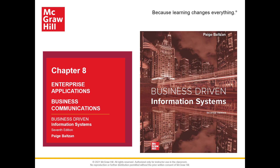Organizations use various types of information systems to run their daily operations. These information systems range from low-level transactional systems, such as purchasing and order delivery, to high-level decision-making systems, such as decision support systems. All these systems have to be tightly integrated so that organizations can meet their strategic goals.